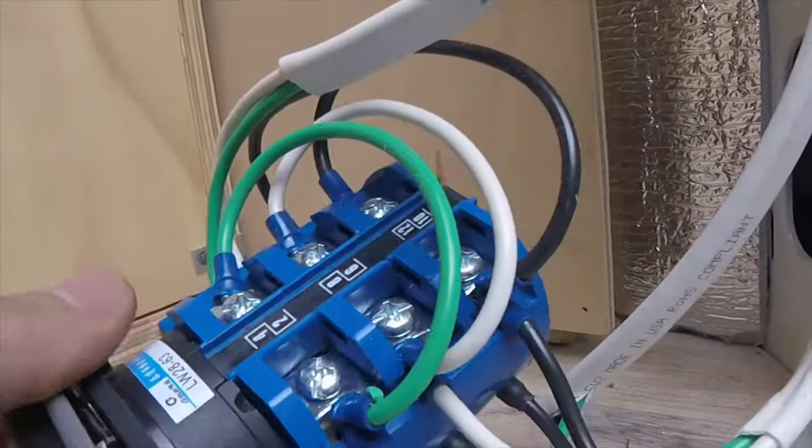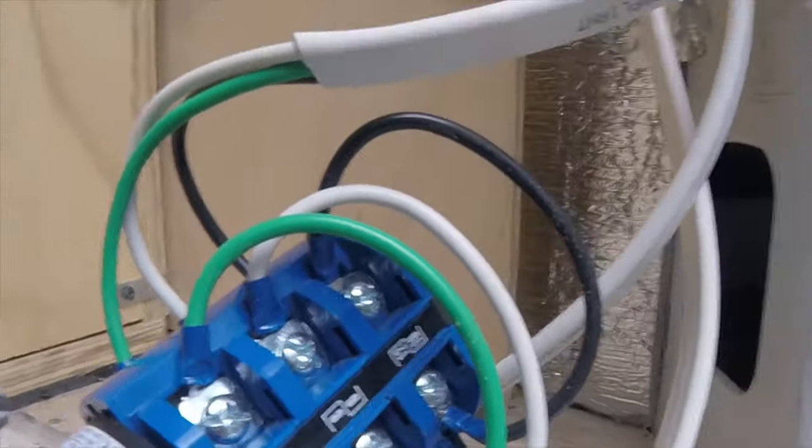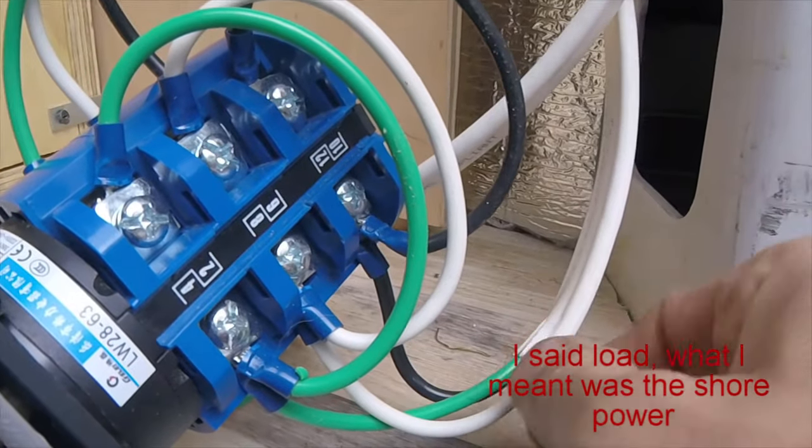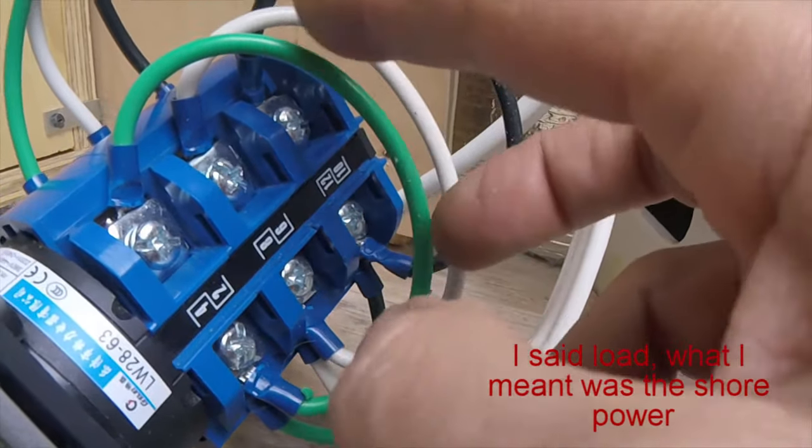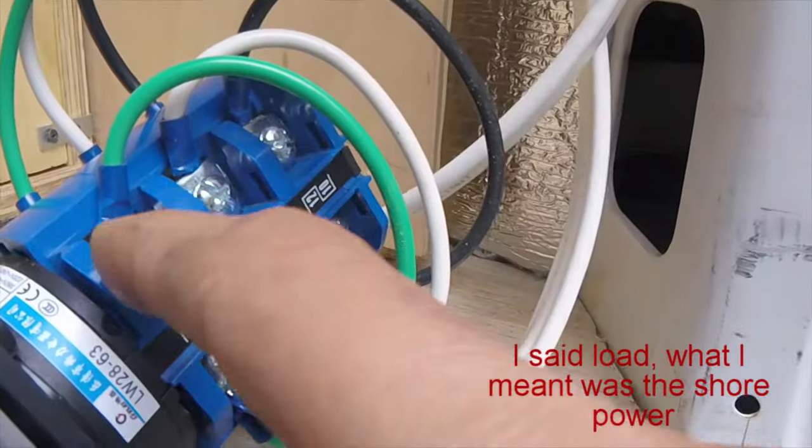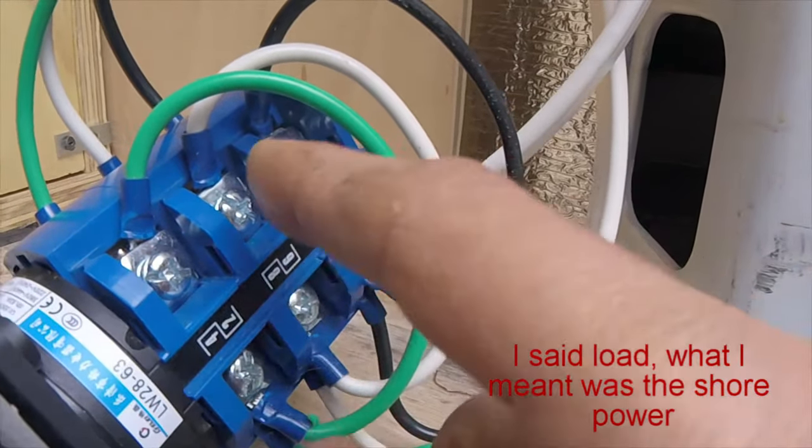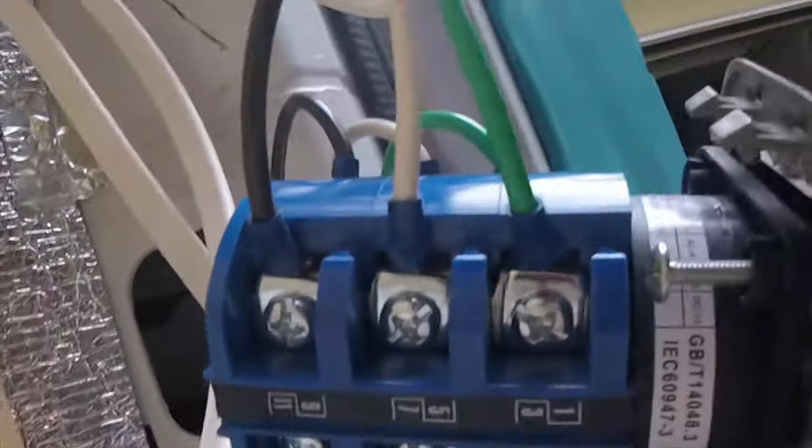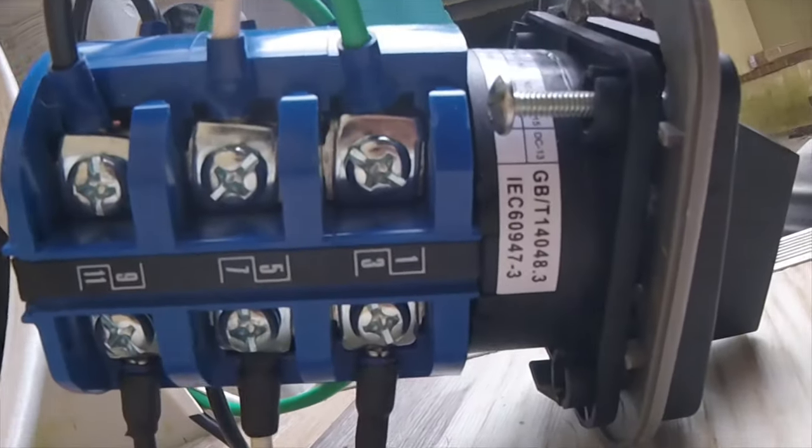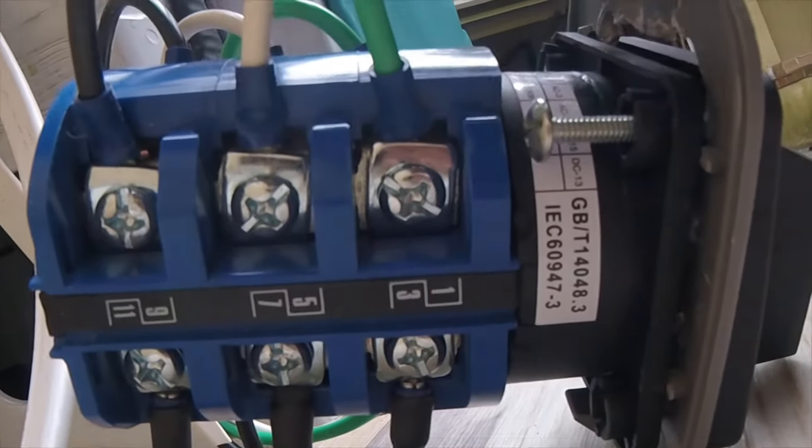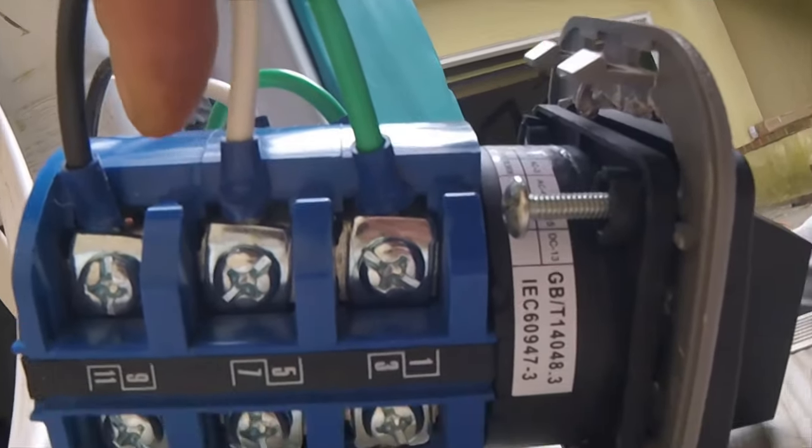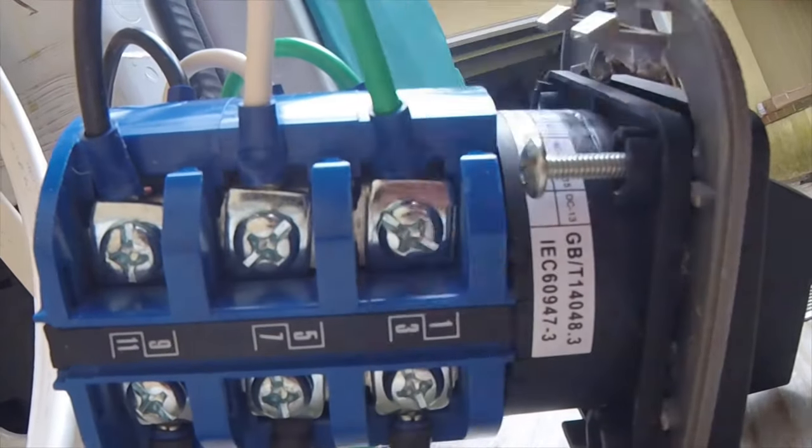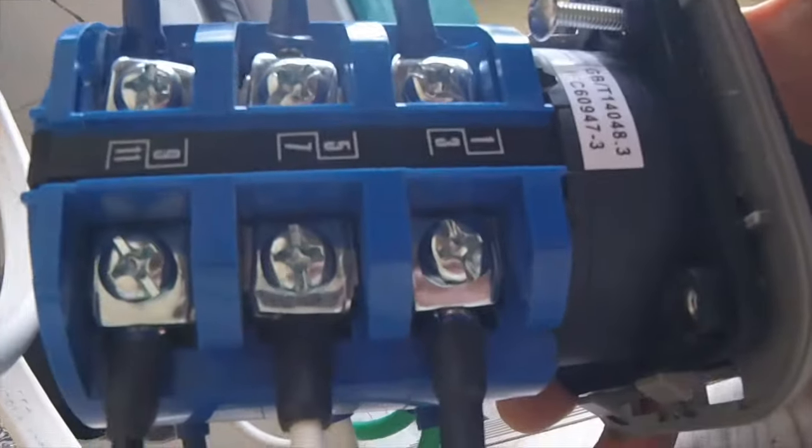Before we go any further, one side is the load, so this is my shore power coming in. And then this side is load. No matter what switch you're on, you're connected to the shore power. And on the other side is my loads. This is my AC load on top, and the bottom load has the hot, neutral, and green. That's my battery charger.